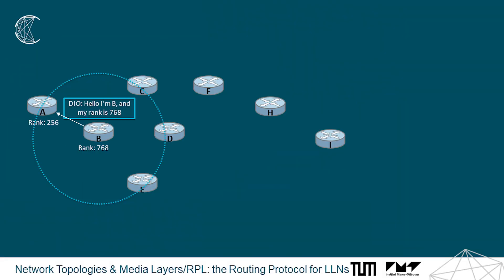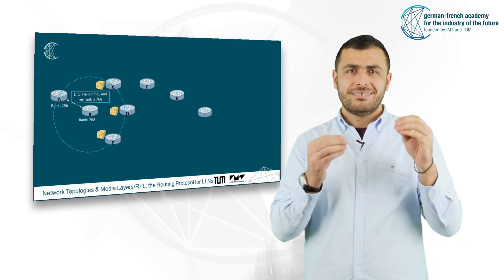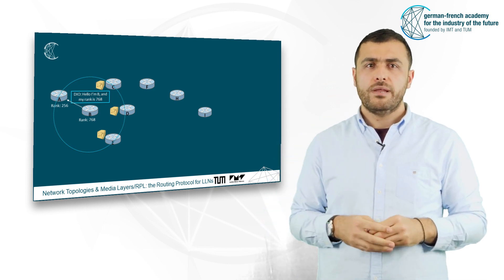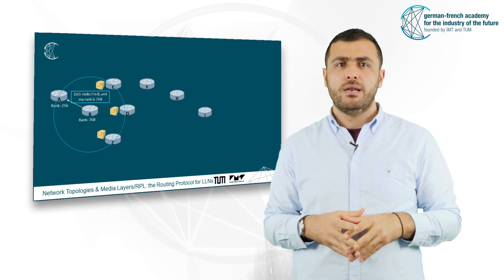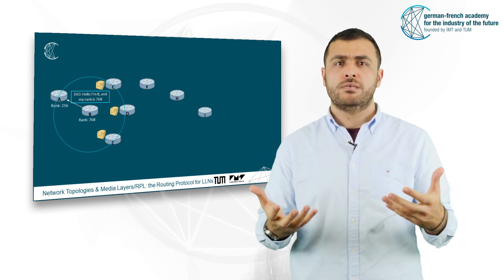And then, node B will start periodically transmitting DIO control packets indicating its own rank. Nodes C, D and E will receive these DIO control packets sent by the node B and they will perform the same operation as node B.